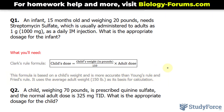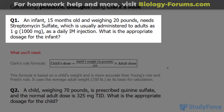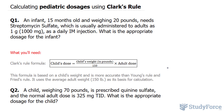Take a look at the formula. In the first question, we're asked: an infant 15 months old and weighing 20 pounds needs streptomycin sulfate, which is usually administered to adults as one gram or 1,000 milligrams as a daily intramuscular injection. What is the appropriate dosage for the infant? We'll use the following formula, and this time, unlike in Fried's formula, we use the child's weight as opposed to their age.